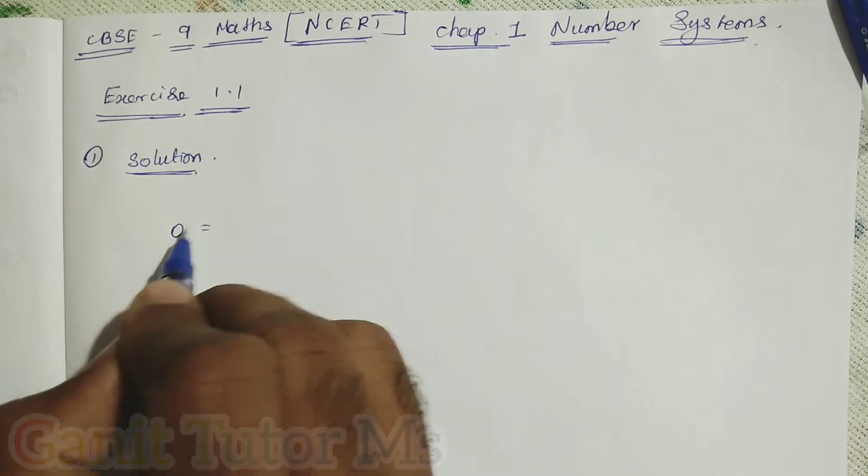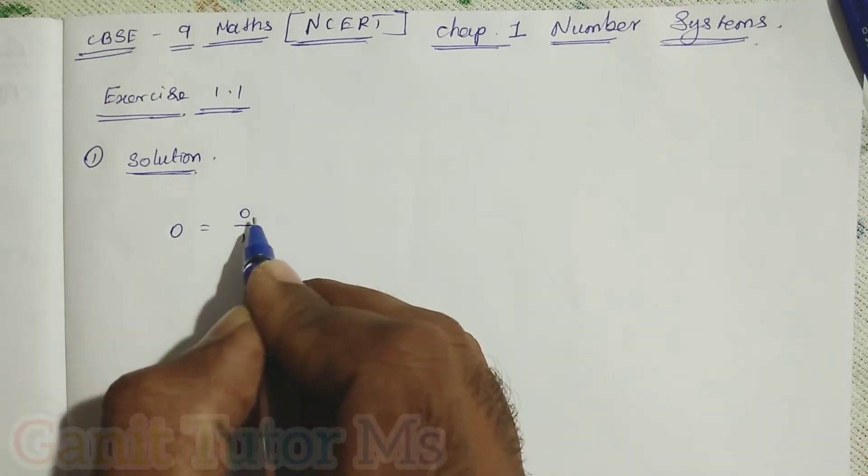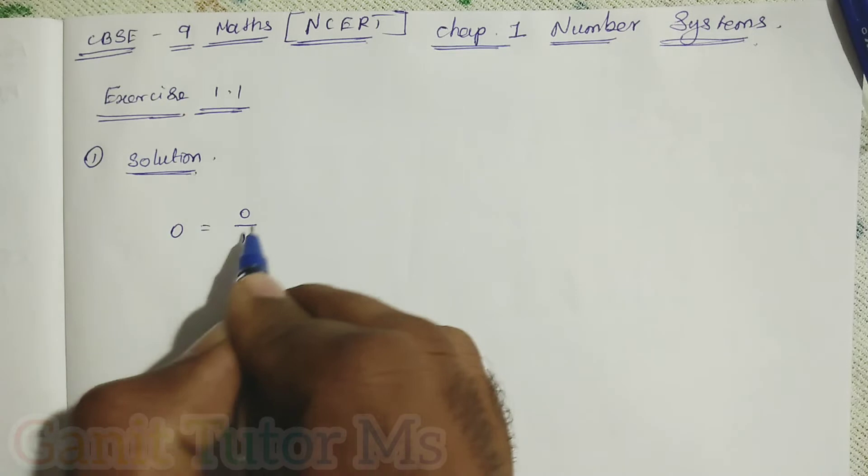Now 0, I can write 0 as 0 by 1. When I solve, it is also 0. So 0 by 1 also equals 0. So 0 can be written in the form of 0 by 1.